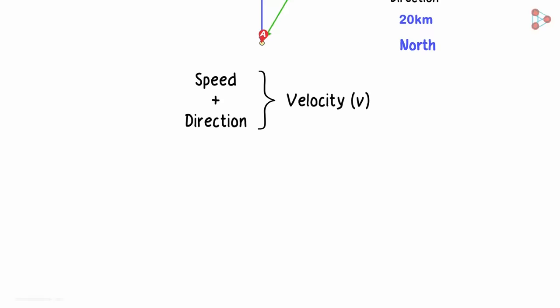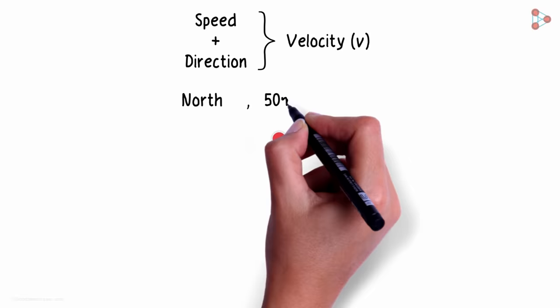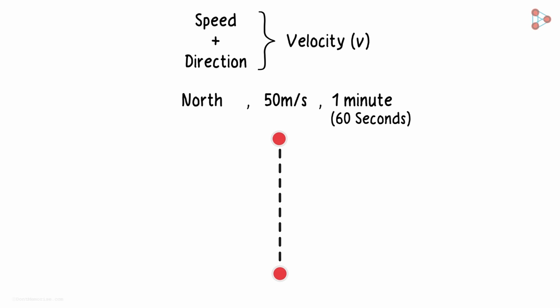What if I tell you that I traveled north at a speed of 50 meters per second for one minute? Would you be able to tell me where I landed up? Yes, you would know I have covered a total distance of 3000 meters and landed up at this point.